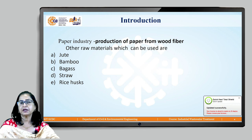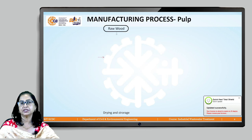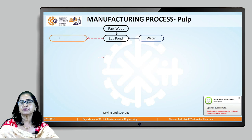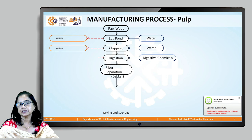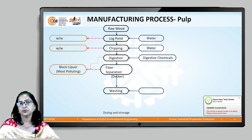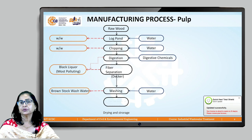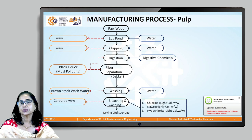Paper can be made from a variety of fibers apart from wood — jute, bamboo, bagasse, straw, rice, and other materials. We are going to learn the manufacturing process of making paper from wood. The process has two parts: the pulping process and the paper-making process. The pulping process involves recovery of cellulose from the raw material, which is wood.